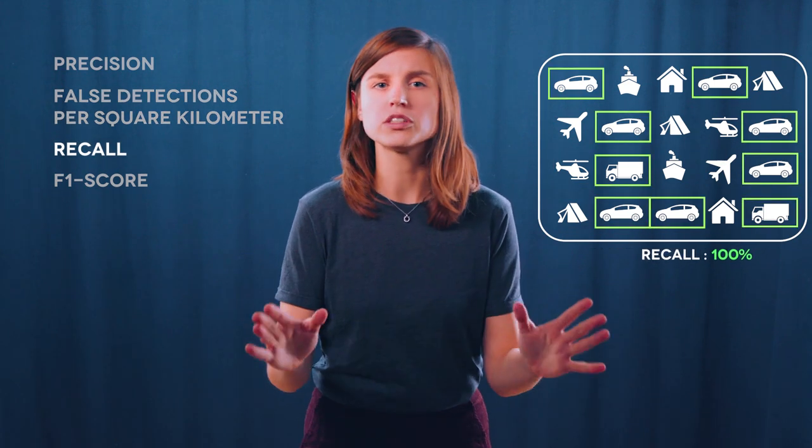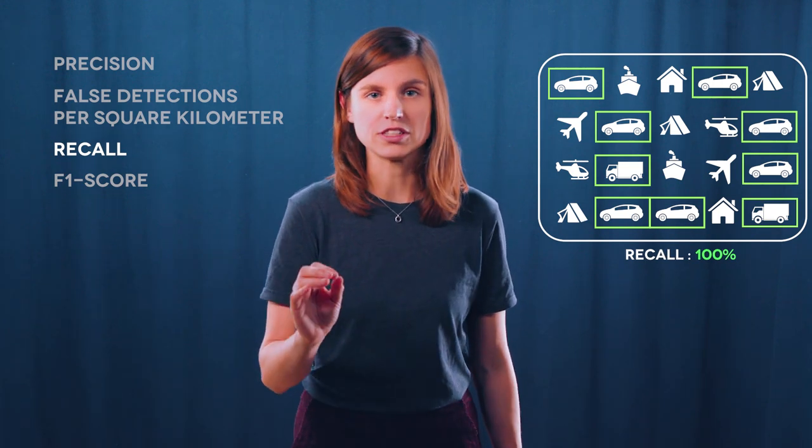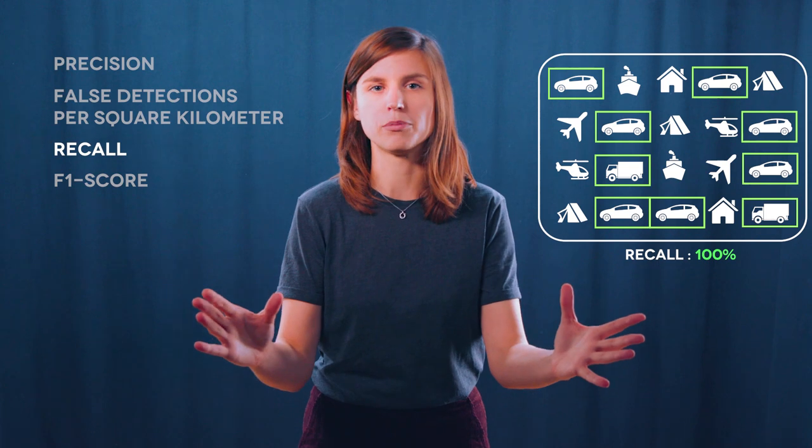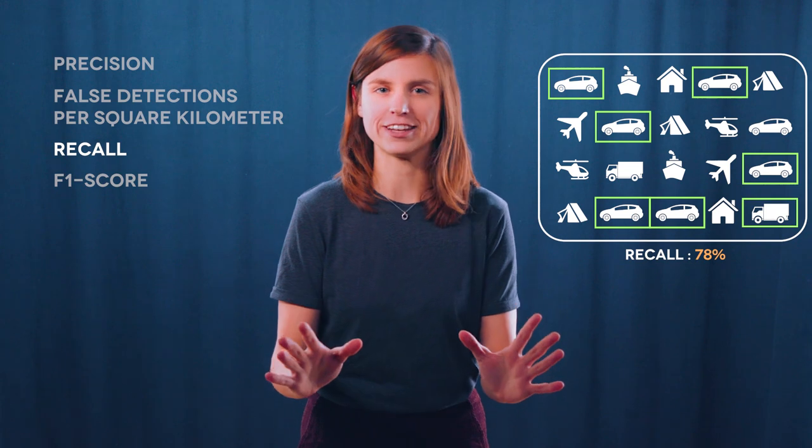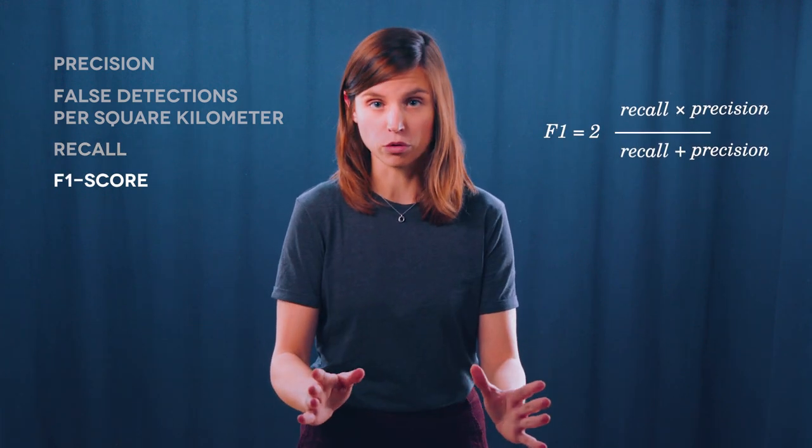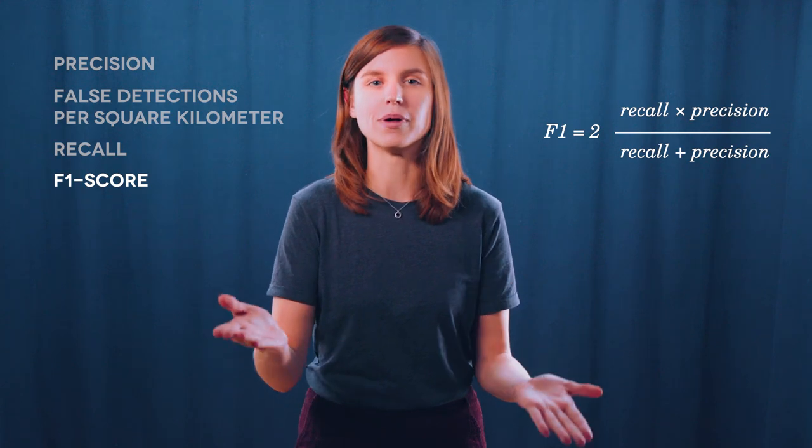The number of these false detections taken per square kilometer is another indicator to monitor. Now, the recall works in a similar way as the precision. At 100%, it means that we have caught all the vehicles in the image. If the score is below that, it means that we are missing some. Finally, the F1-score is the global score to monitor and tell if the recall and precision are well balanced.